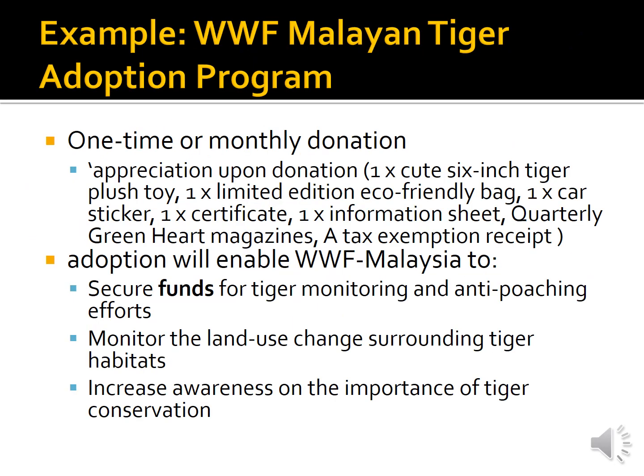For example, there is the WWF Malayan Tiger Adoption Program. We know that the number of Malayan tigers is declining despite many efforts over the past years. This kind of adoption is one of the mitigation measures we can use. It enables WWF Malaysia to secure funds for tiger monitoring and anti-poaching efforts, to monitor land use changes surrounding tiger habitats, and to increase awareness of tiger conservation through posters, activities, or commercials. That is the last of my lecture on the threat and conservation of biodiversity. Feel free to check the assignment on eLIS. Thank you.